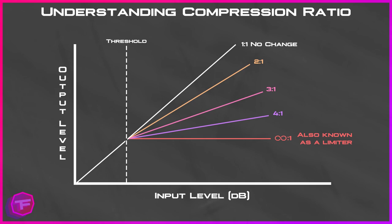Or a signal exceeding the threshold by eight decibels will be attenuated down to four decibels above the threshold. The same logic applies to every ratio — for a 3:1 ratio, if a signal exceeds the threshold by three decibels it will be compressed down to one decibel past that threshold. A threshold of infinity-to-one would be considered limiting. We've discussed the limiter filter in a previous video if you're interested.